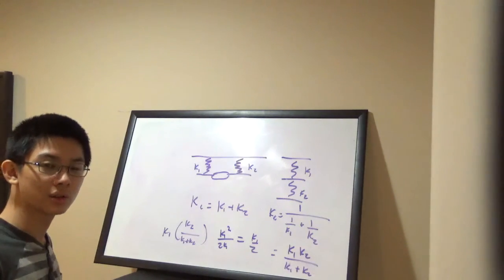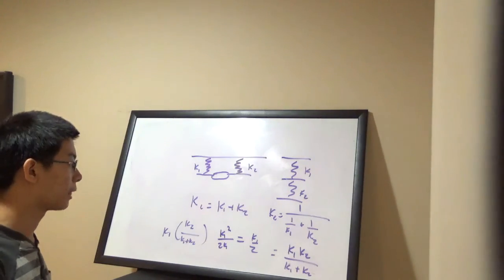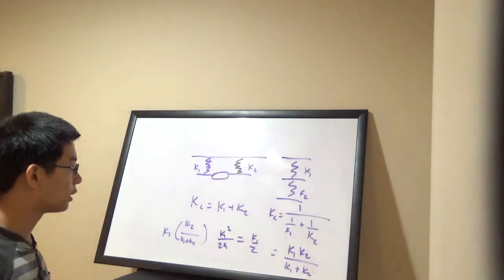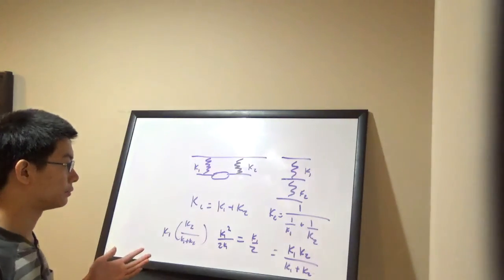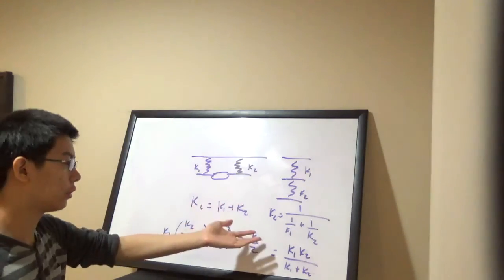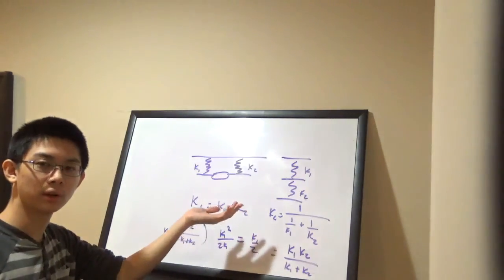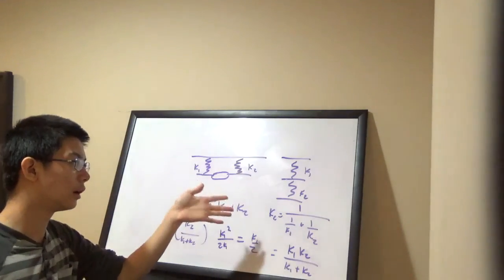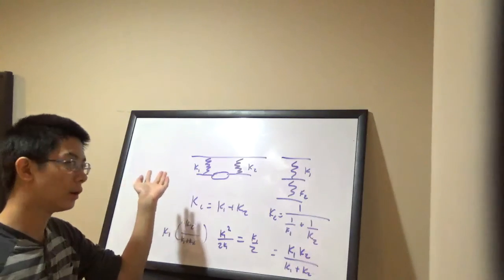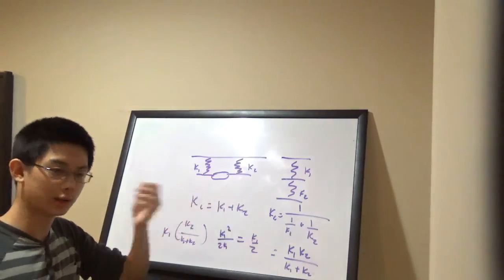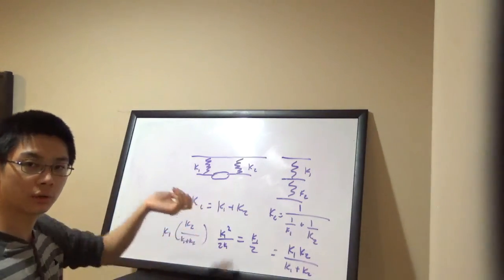So that is how we would find the coefficient of the spring, the spring coefficient, given different ways that we can combine. If we had combinations of them, we just consider pairs at a time, and then we can figure out what the total spring is.